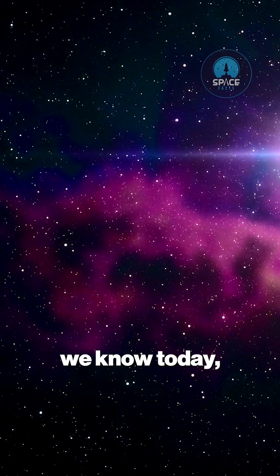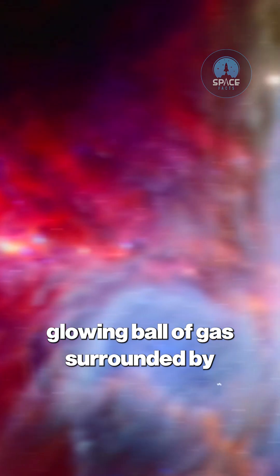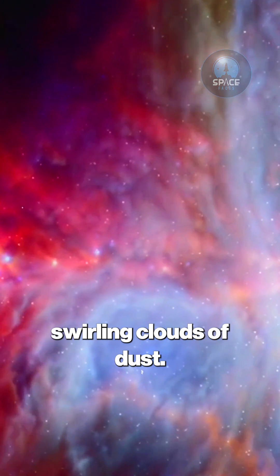Before the Sun became the steady star we know today, it existed as a turbulent protostar, an intense glowing ball of gas surrounded by swirling clouds of dust.